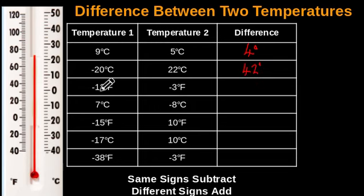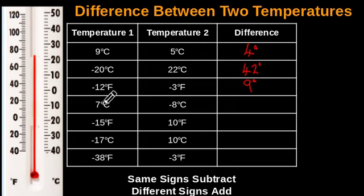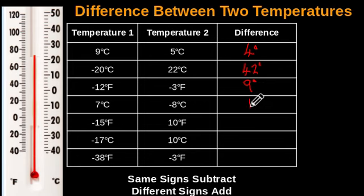The next row we have negative 12 degrees Fahrenheit and negative 3 degrees Fahrenheit. They're both negative temperatures — same signs. Subtract the lesser value from the greater value: 12 minus 3 gives you 9 degrees. The next row we have 7 degrees Celsius and negative 8 degrees Celsius — positive and negative, different signs. Add the values: 7 plus 8, that's 15 degrees as the difference.